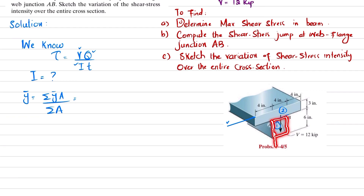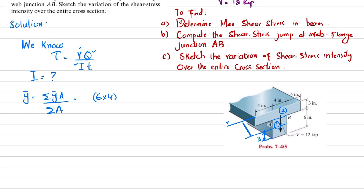Calculating the area of the first portion: the width is 4 inches and the total height is 6 inches, so area A1 = 6 × 4. Its centroid is at half of 6, so the distance from the top is 6 inches — that is ȳ1 = 6. So we have 6 multiplied by area (6 × 4). For area A2: the width is 12 and the height is 3, so A2 = 12 × 3.